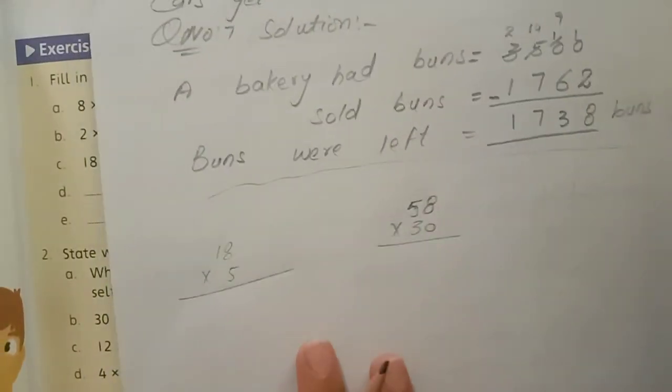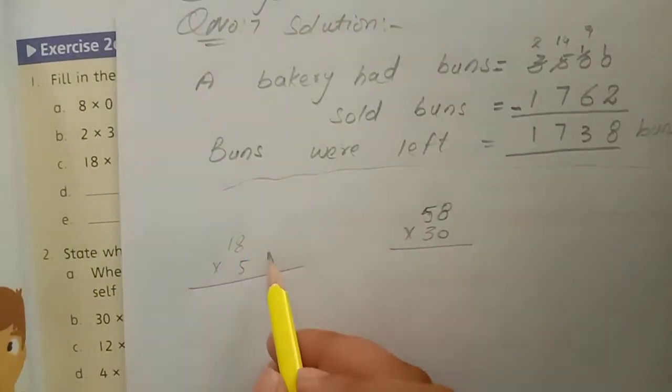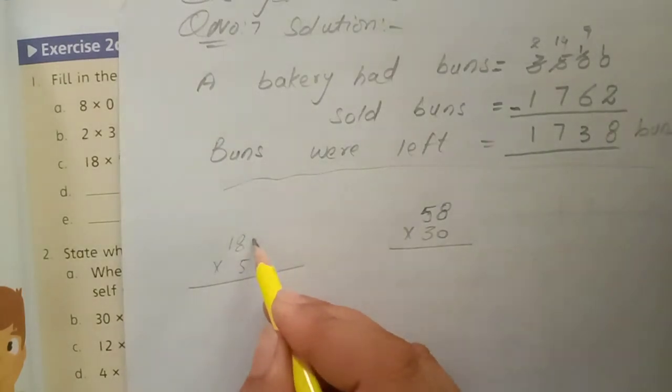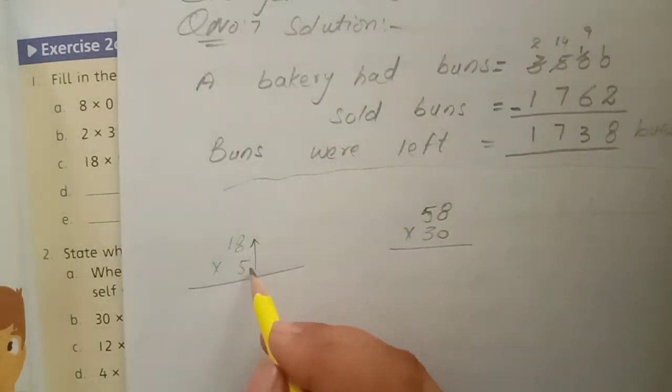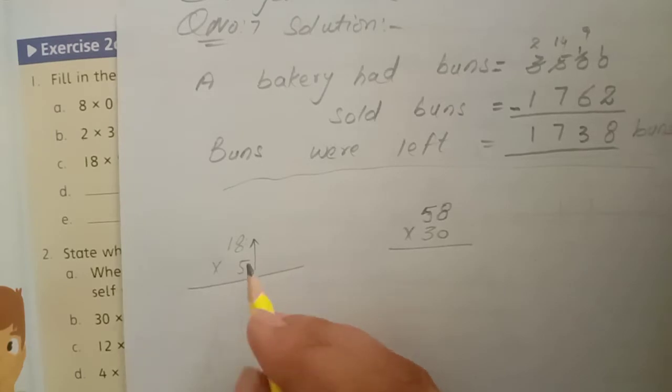18×5. We will multiply both. When we add and subtract, we will multiply the right side. We will multiply both.